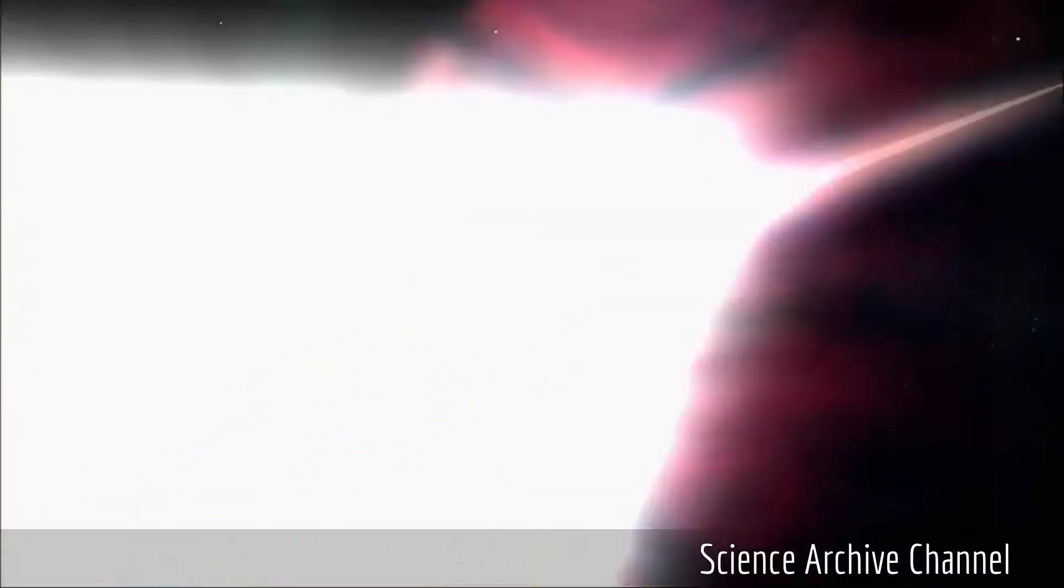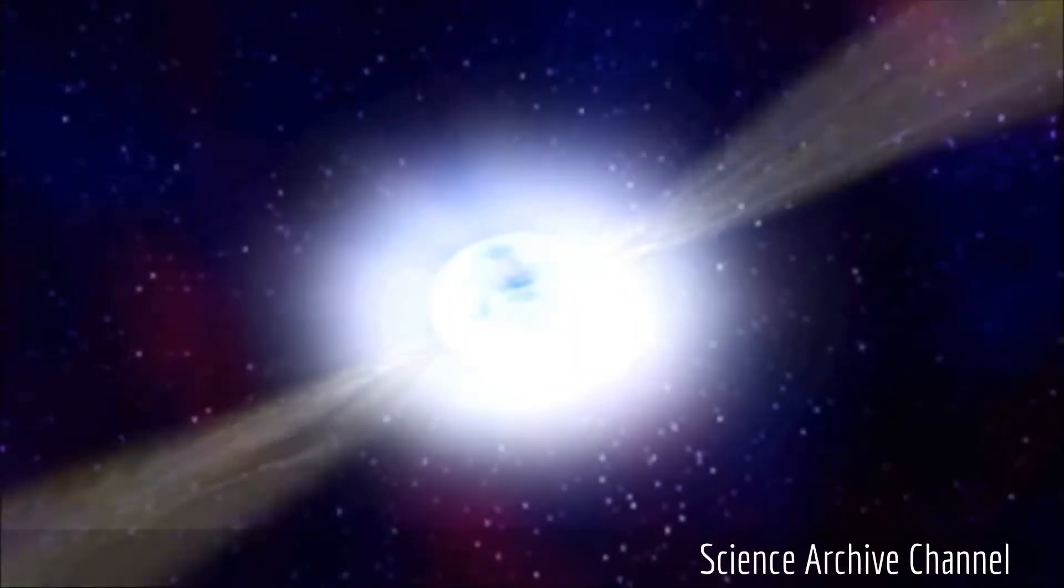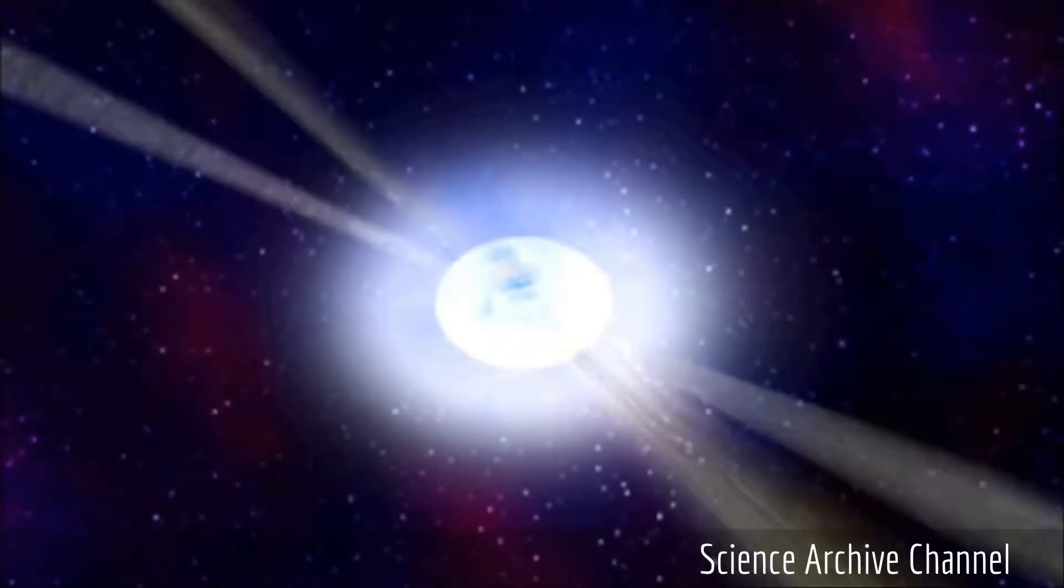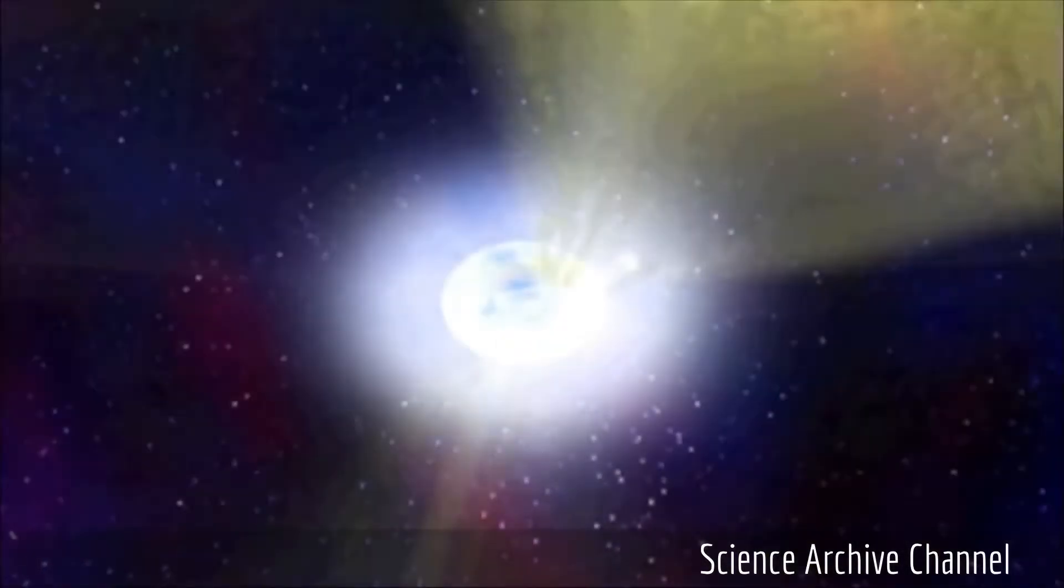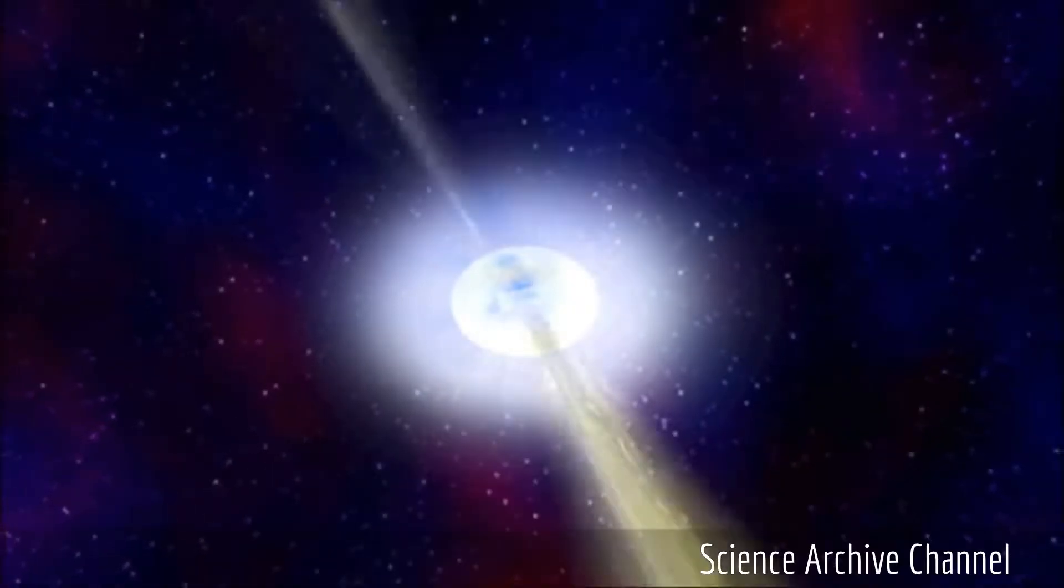One theory is that some massive stars undergo a weight loss program right before exploding as a supernova, losing 90% of their mass. So instead of collapsing into a black hole, the emaciated star becomes a neutron star with extreme magnetic powers.